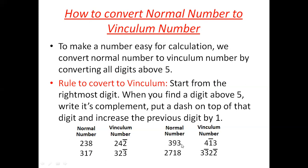Next number: 393. Start from the rightmost digit. 3 is less than 5, so it remains as it is. The next digit, 9, is above 5, so take its complement. Complement of 9 is 1. Put a bar on top of that digit and add 1 to the previous digit: 3 + 1 = 4.